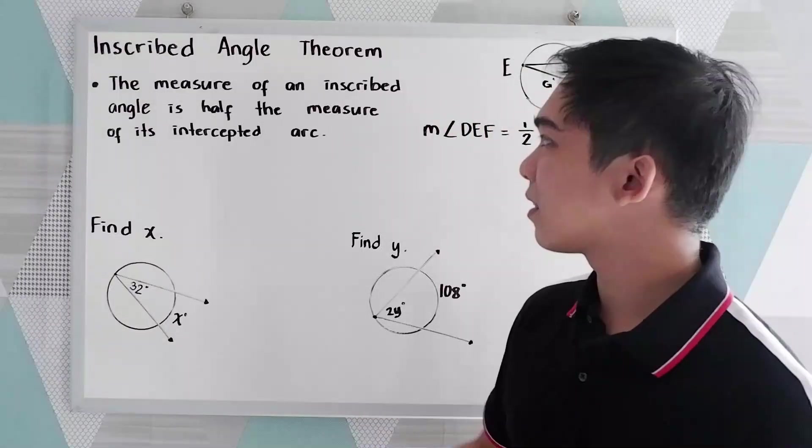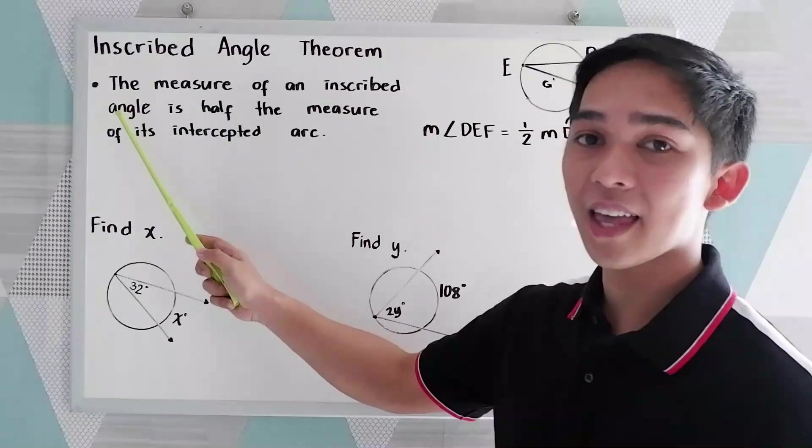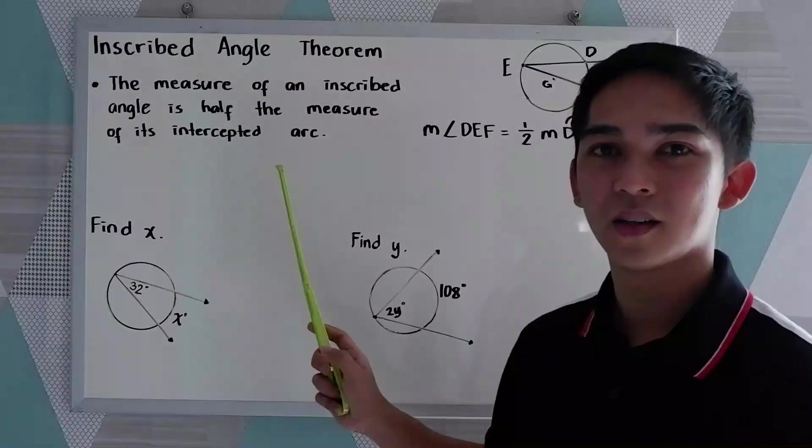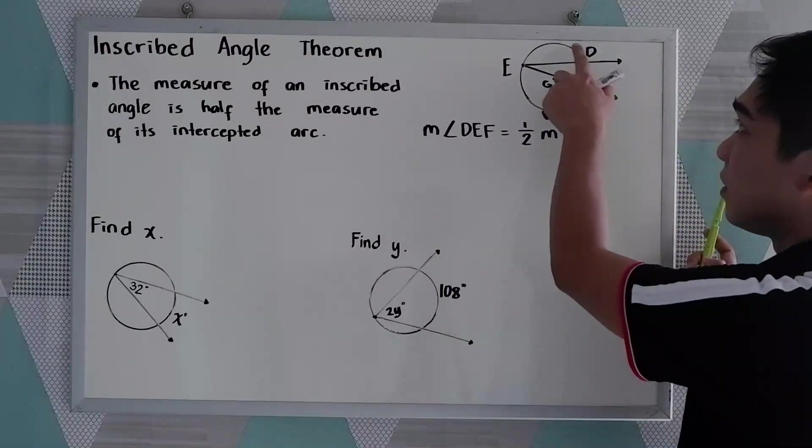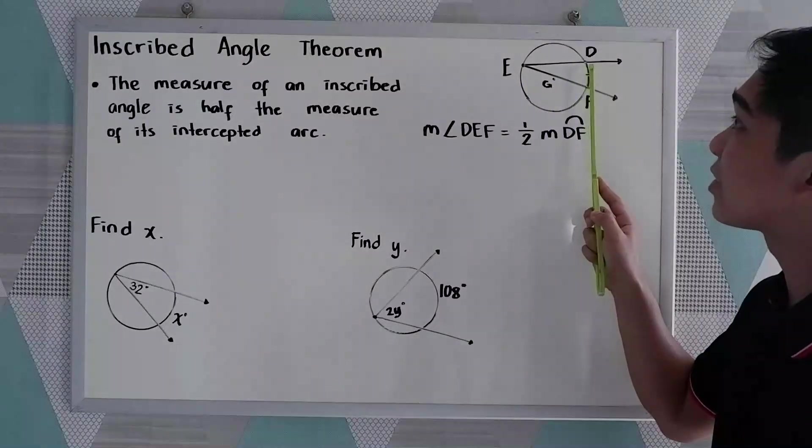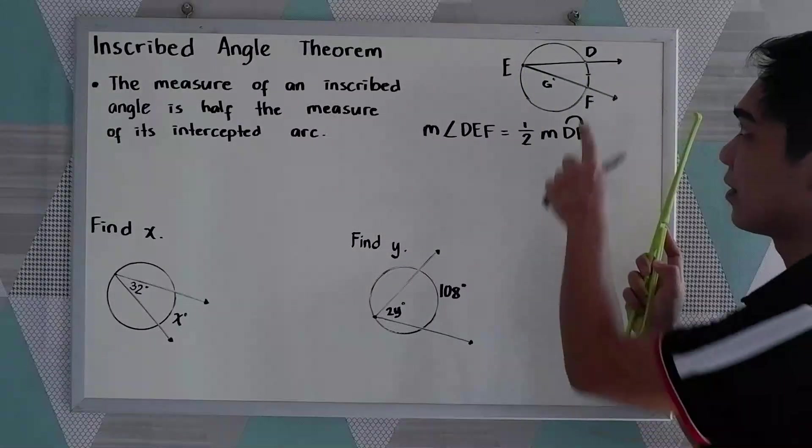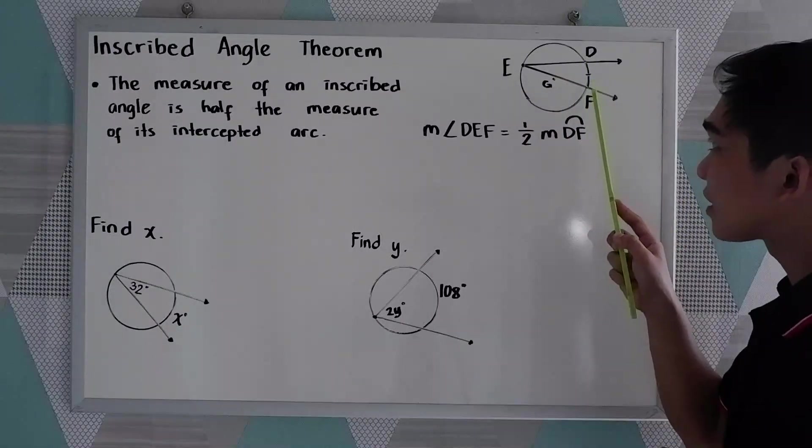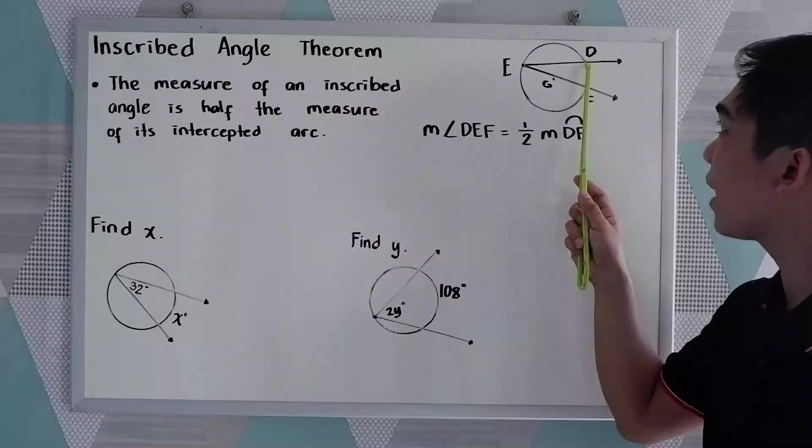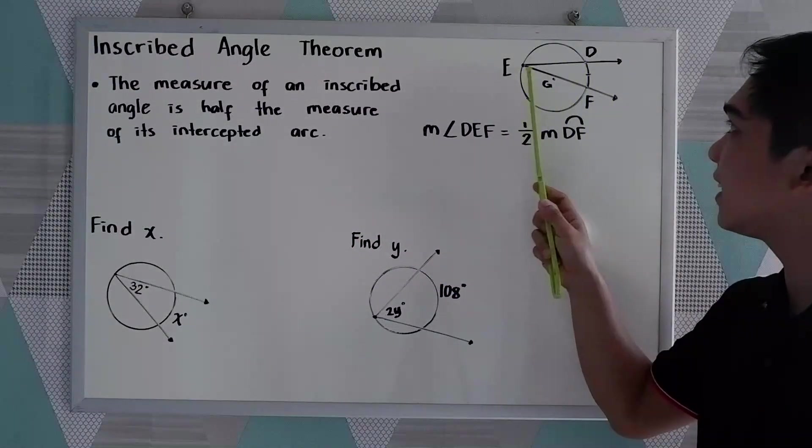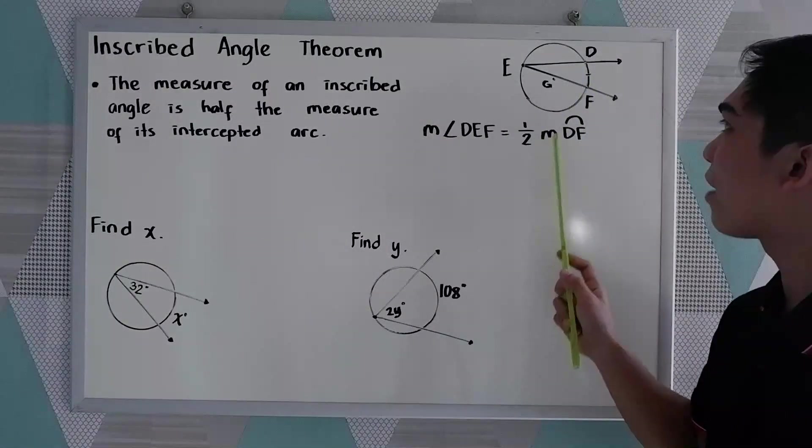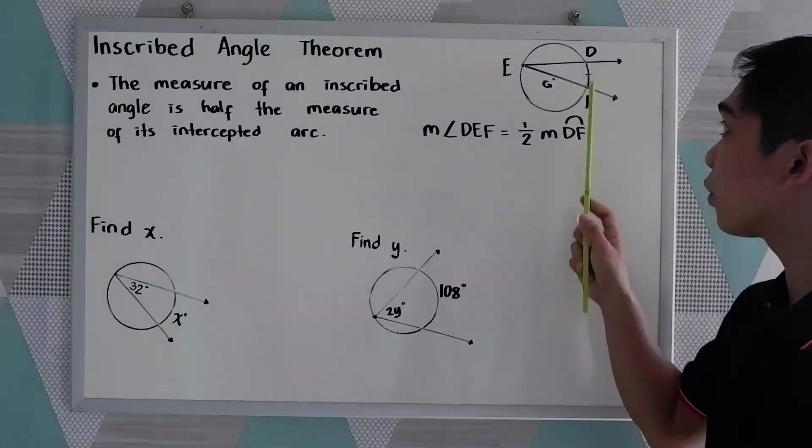This theorem states that the measure of an inscribed angle is half the measure of its intercepted arc. We have our diagram here, the circle G. And we have an inscribed angle which is D-E-F and the intercepted arc. Following our theorem, to find the measure of the inscribed angle D-E-F, measure of angle D-E-F that is equal to one-half of the measure of the intercepted arc which is D-F.